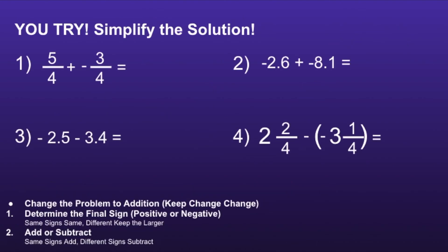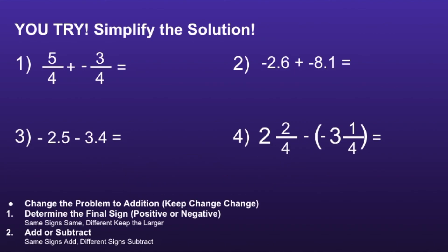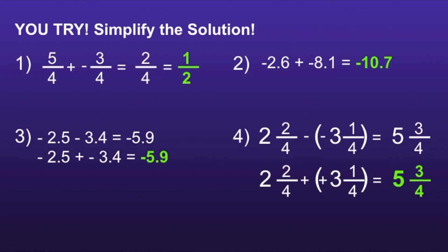Here are four problems I would like you to try. I would recommend you pause the video now, solve, and then resume when you're ready to see if your solutions are correct. Number 1 is equal to 1 half. Number 2 is equal to negative 10.7. Number 3 is equal to negative 5.9. And number 4 is equal to 5 and 3 fourths. If you had any of these incorrect, I would recommend you pause, review your work, and see if you can find your mistake. Thank you for watching.